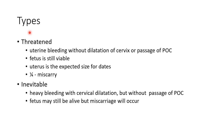Now let us see about the types of abortion. In threatened abortion, there is uterine bleeding without dilatation of cervix or passage of products of conception. The fetus is still viable and the uterus is the expected size for dates. Only one-fourth of threatened abortion cases lead to actual miscarriage.